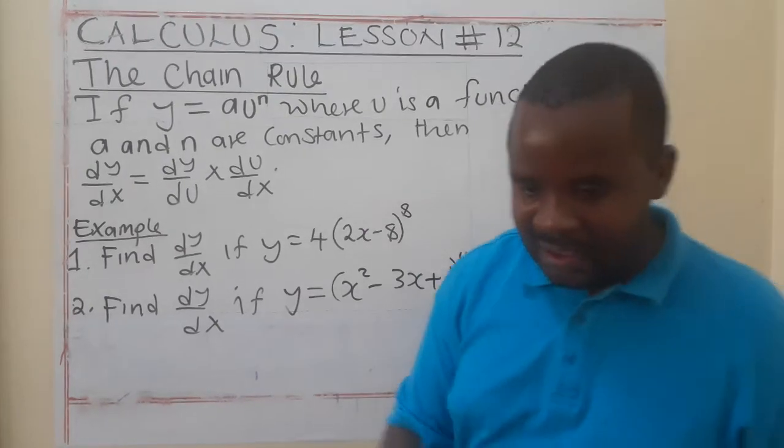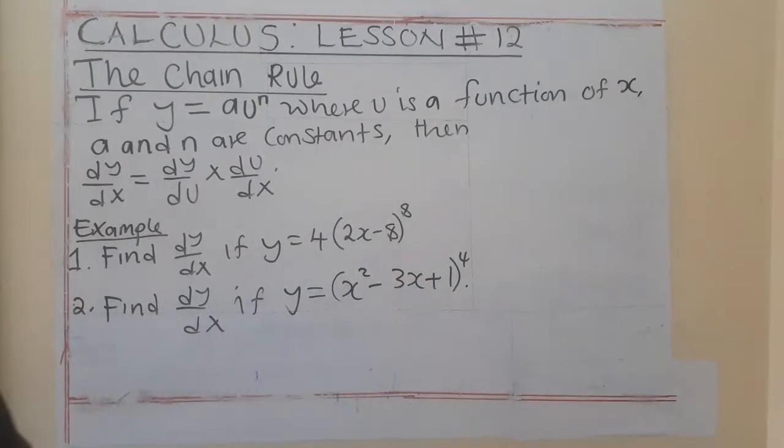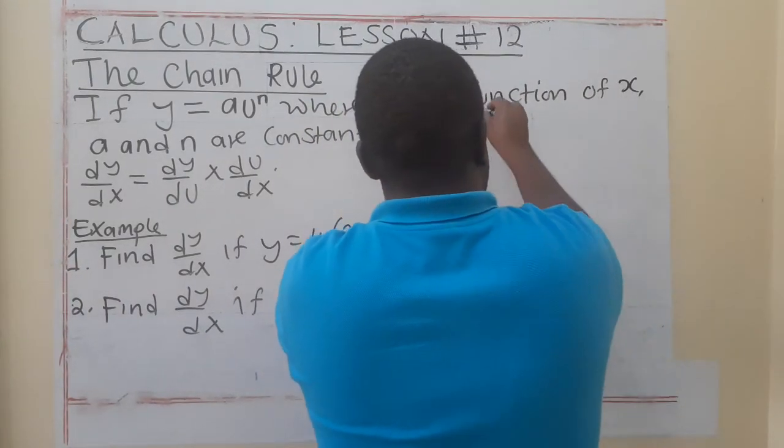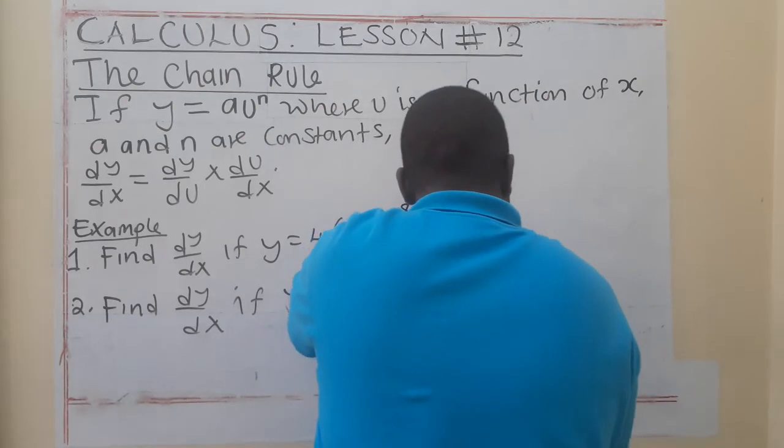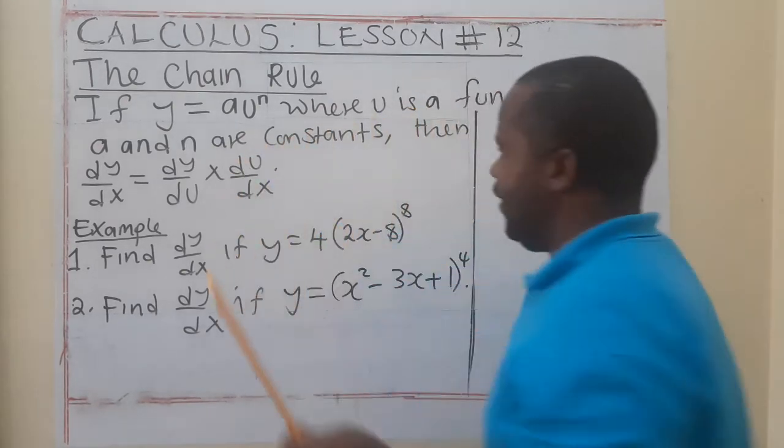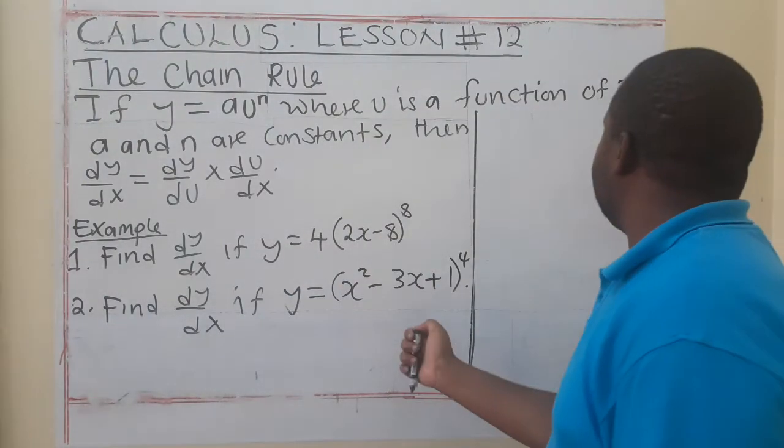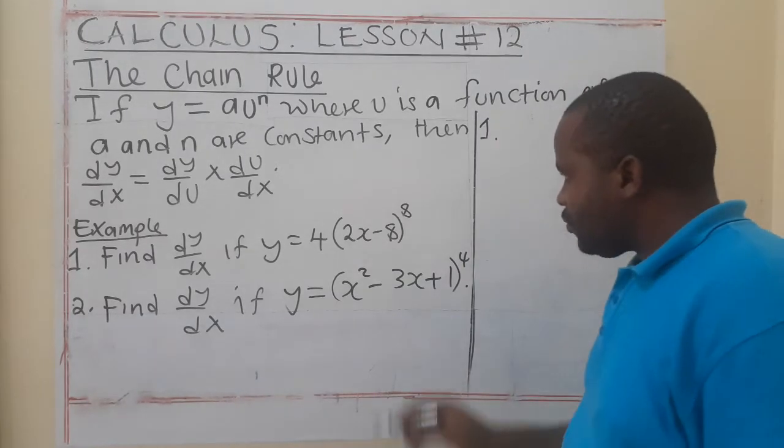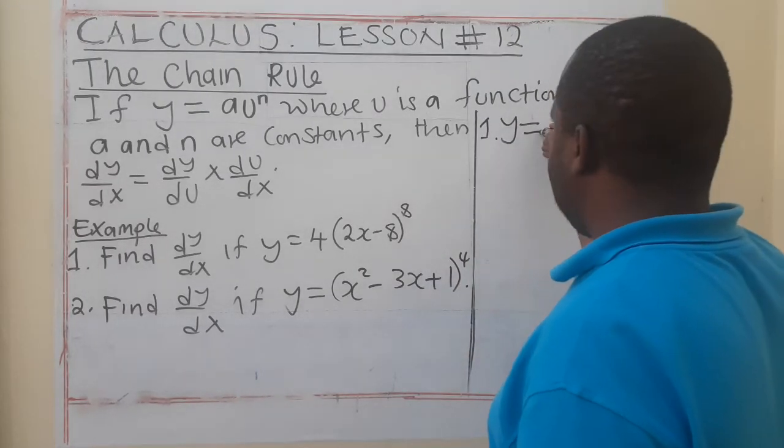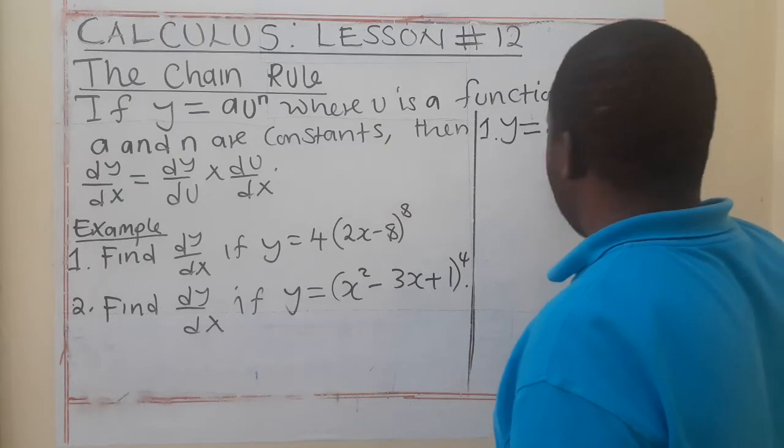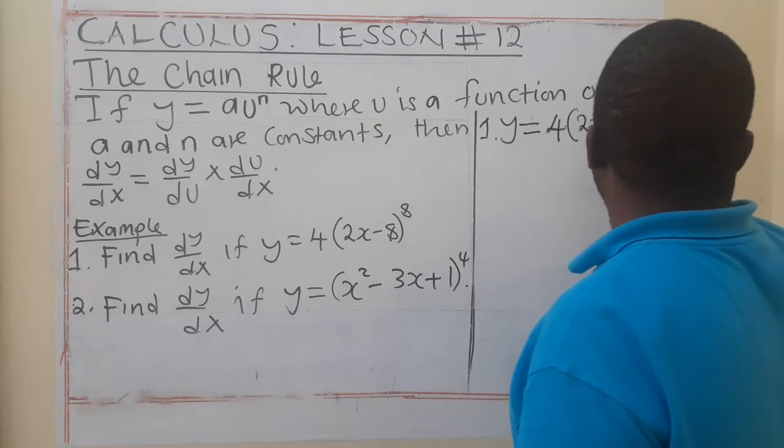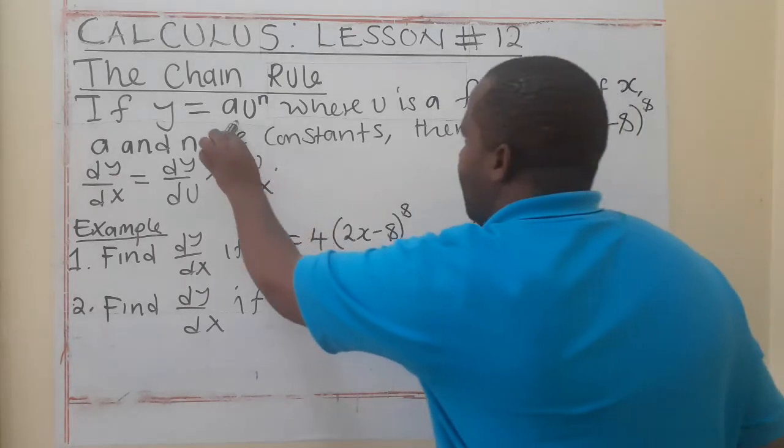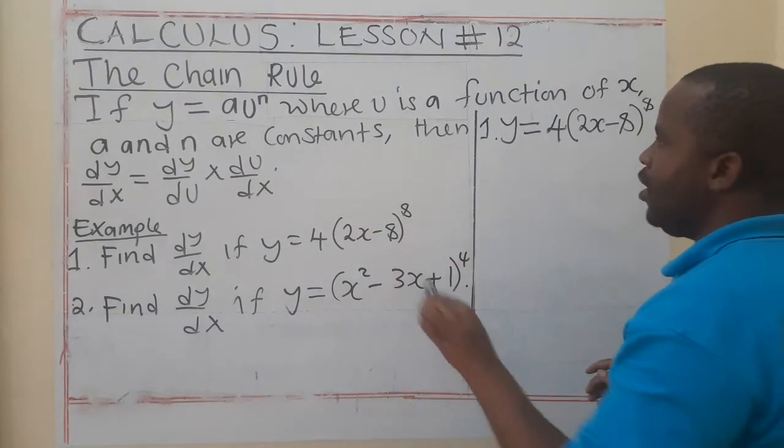So, let's see how we can work out this. Let's see how we can deal with the first one. Number one. We are saying, if y is equal to 4 then 2x minus 8 to the power of 8. In this case, what is our a here? Our a is 4. What is our u? Our u is 2x minus 8.